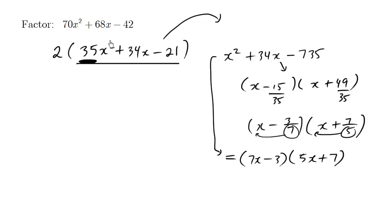7x times 5x is 35x². We have positive 49x minus 15x gives us 34x. And then negative 3 times 7 is indeed negative 21. So we essentially factored this part here as this part here.